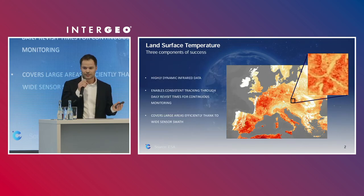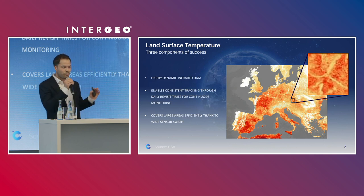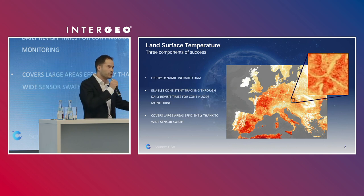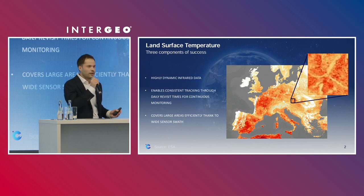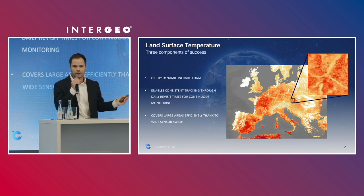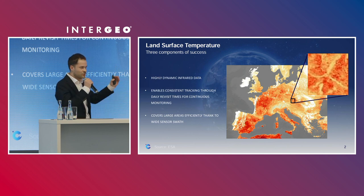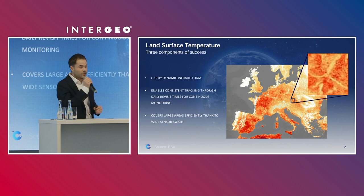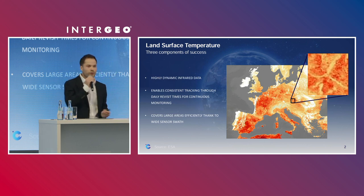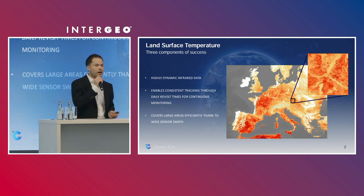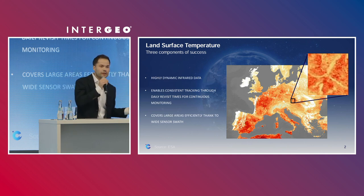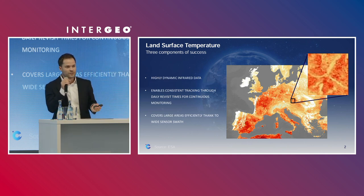To put it very bluntly, LST is the measurement of what a surface would feel like if you were to touch it in a given location. When talking about surface from the perspective of satellites, it can mean many different things — the surface is what the satellite will see when entering through the atmosphere. So the surface could be snow, ice, a lawn in your garden, a roof of this building, or the canopy of a forest or a crop.